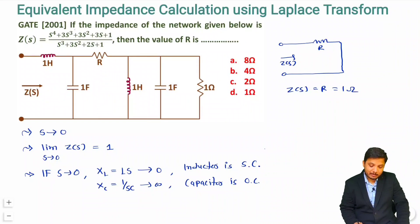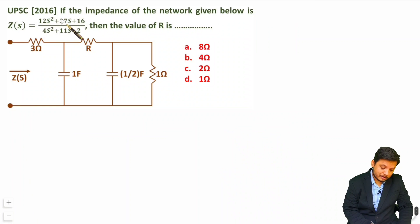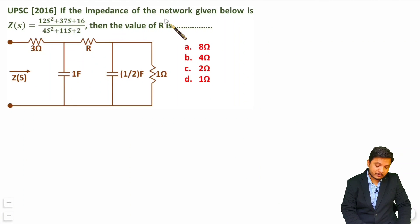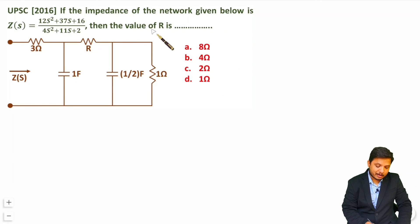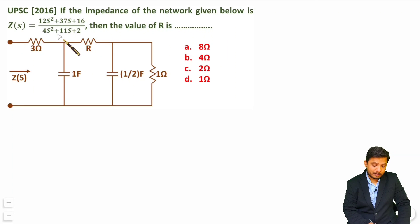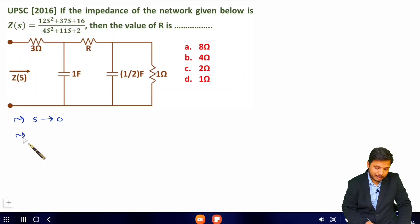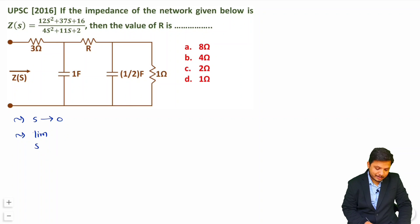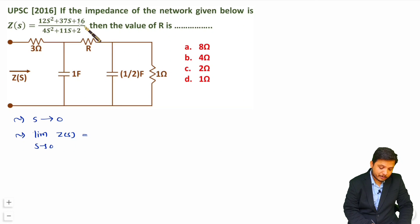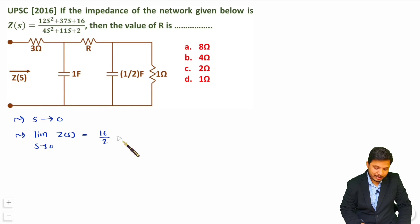Let me give you one more interesting example to further your understanding. In this question, the impedance of the network below is Z(s) given by this equation, and we are asked to find the value of R. Again, we consider s going towards 0. The limit as s tends to 0 of Z(s) gives (0 + 0 + 16)/(0 + 0 + 2) = 16/2 = 8.